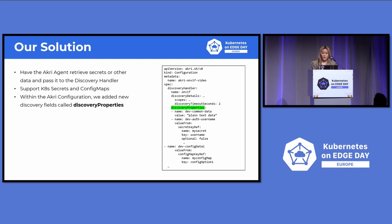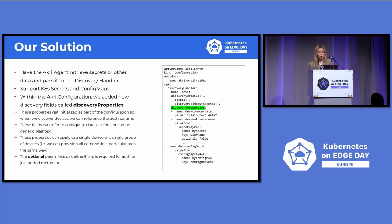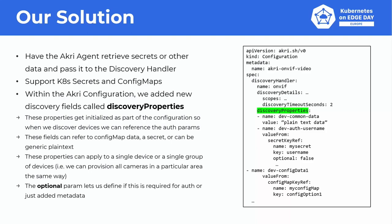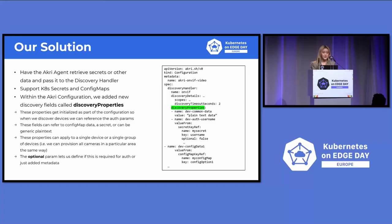In the discovery properties section, where we pass the secret data, it's in the form of a key-value pair list, initialized as part of the configuration by the user. These properties can apply to a single device or a group of devices, so we can provision all cameras in a particular area the same way. There is also an optional parameter defaulted to false — if the key doesn't exist in the secret or config map, configuration deployment will fail. But if set to true and the key doesn't exist, the agent will simply not add the entry to the list, and deployment will still succeed.